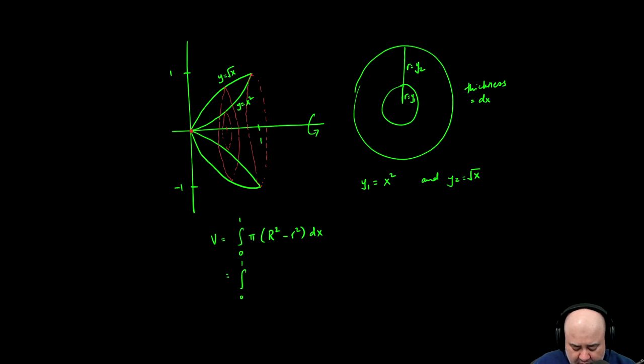So the volume will be from 0 to 1 of pi times the outer radius is y sub 2 squared minus the inner radius is y sub 1 squared with respect to x.